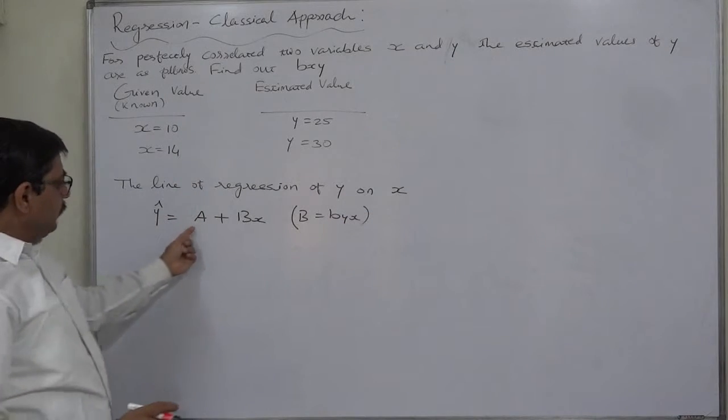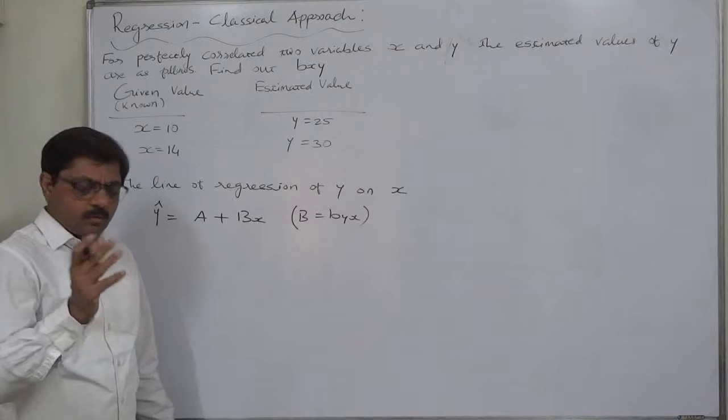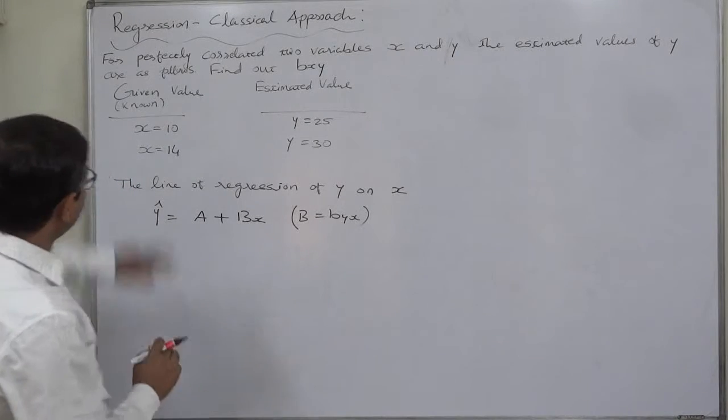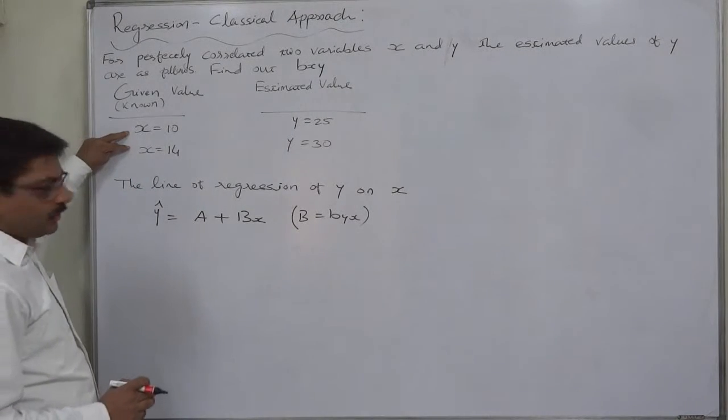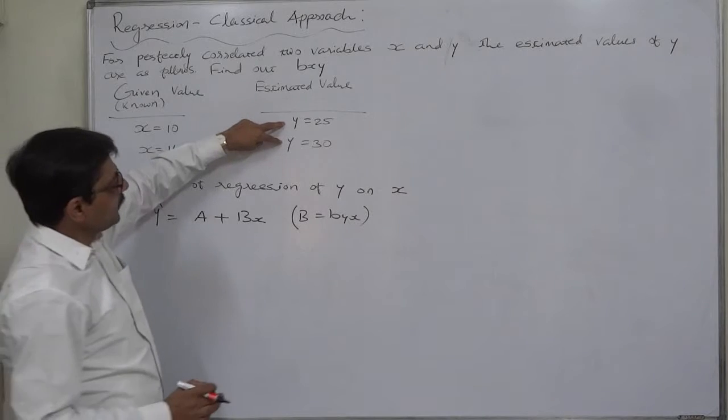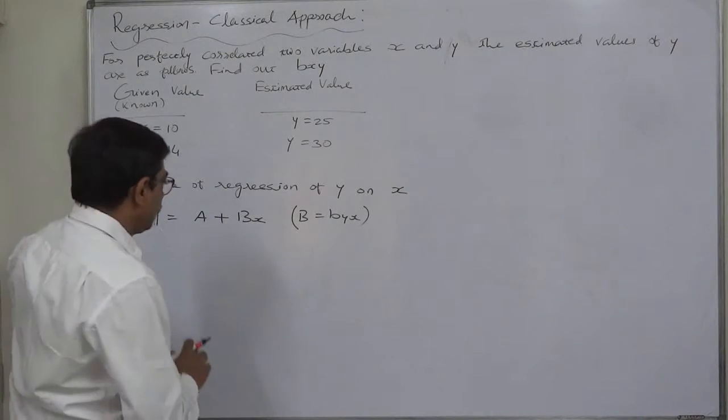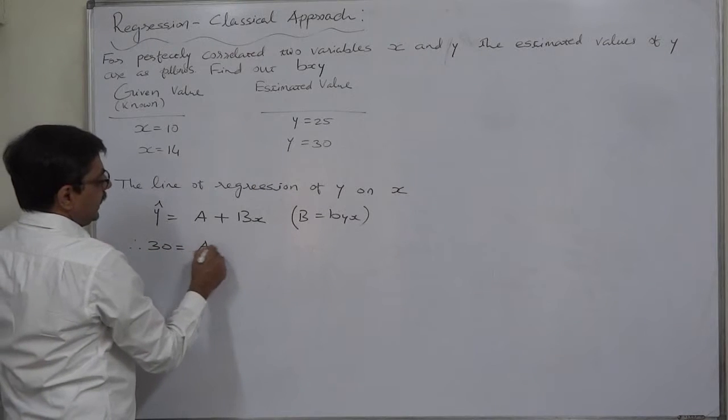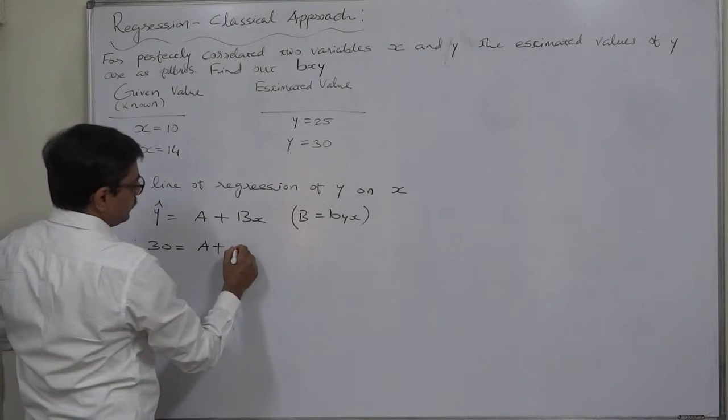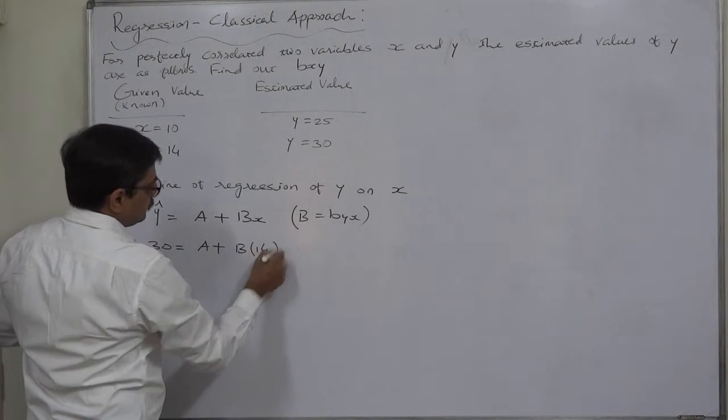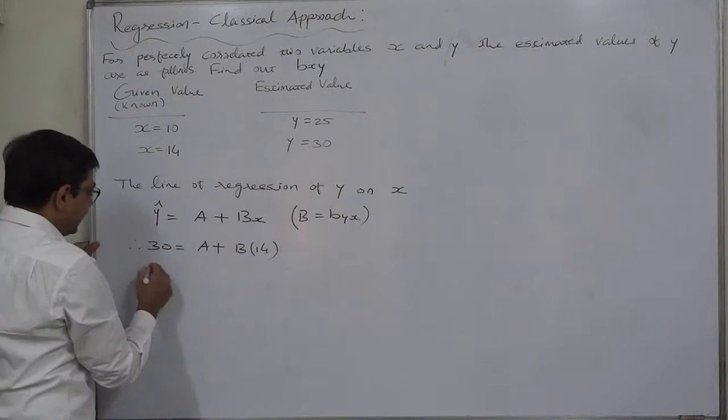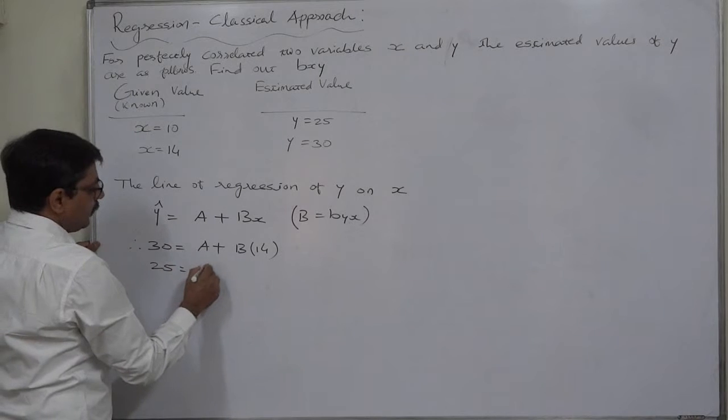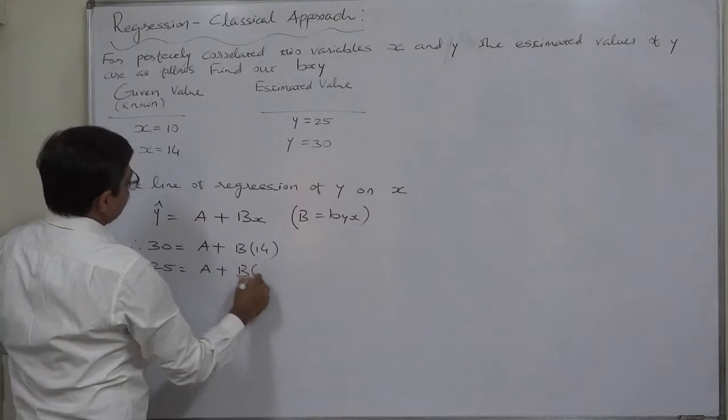We don't have values of a or b. No problem. We have two values of x known values of x and two estimated values based on them. Now we can say that y takes value 30 if x takes value 40. Similarly, y takes value 25 if x takes value 10.